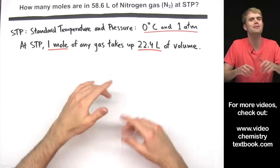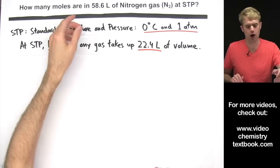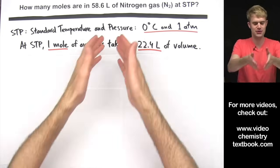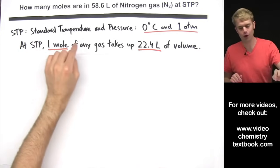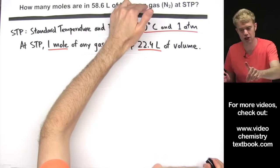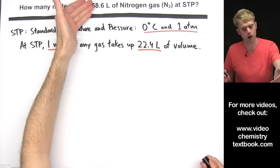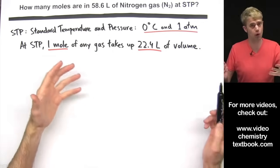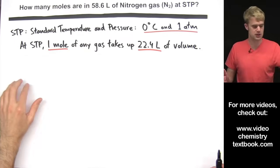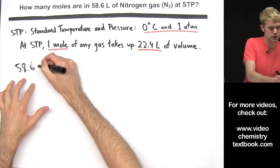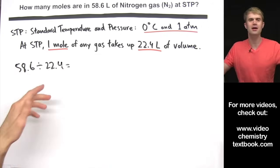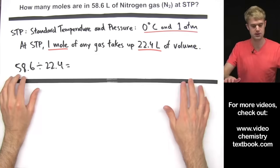Now let's do another problem, and then I'll talk about some common mistakes. How many moles are in 58.6 liters of nitrogen gas, N2, at STP? Again, at STP one mole of any gas takes up 22.4 liters. If we had 22.4 liters of nitrogen gas, we'd have just one mole. We have more than 22.4 liters, so we're going to have more than one mole. We want to find out how many times 22.4 goes into 58.6 — so the math is 58.6 divided by 22.4.